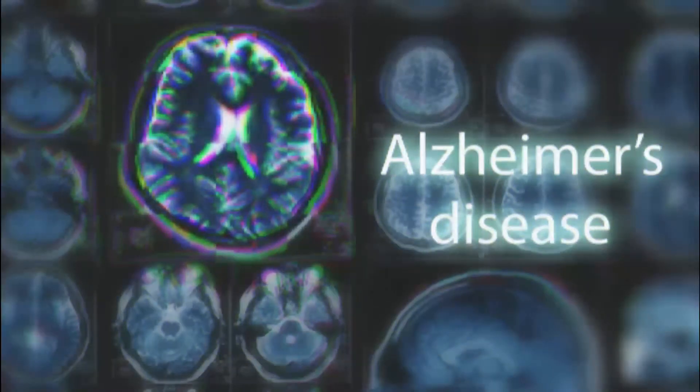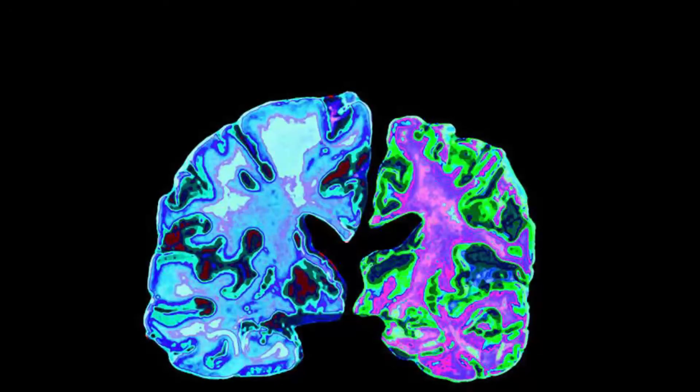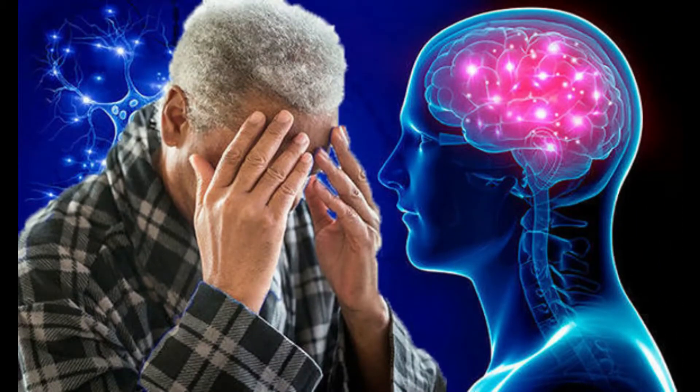Number seven on our list is Alzheimer's disease. This disease gradually destroys thinking and memory skills of an individual. Alzheimer's disease is a progressive brain disorder and irreversible. In 2015, there were 1.5 million deaths because of this disease, responsible for 2.7 percent of deaths in the world.